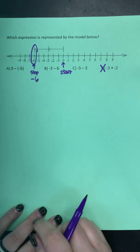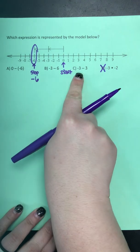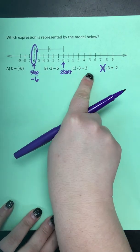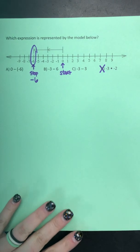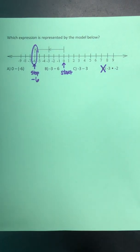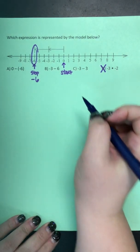So because they stop at negative six, that's the answer I need to find in one of these equations, one of these expressions. So I'm going to start solving. They all have negatives, so I'm going to use my integer rules. Let's start with letter choice A.